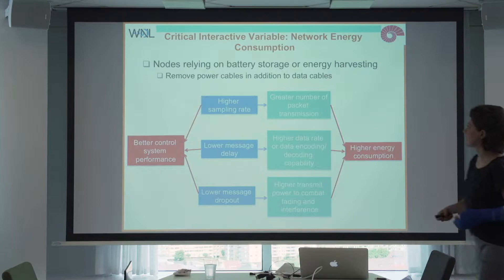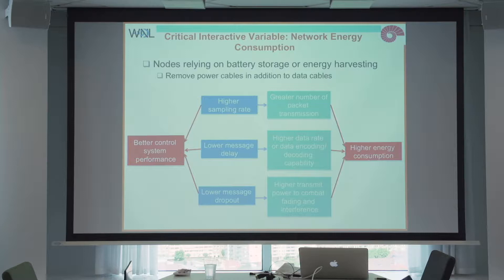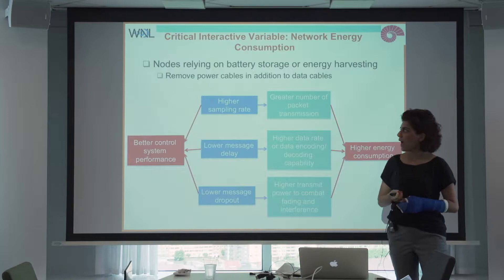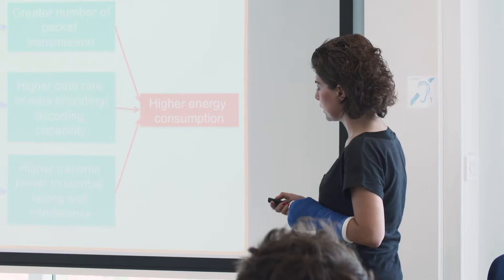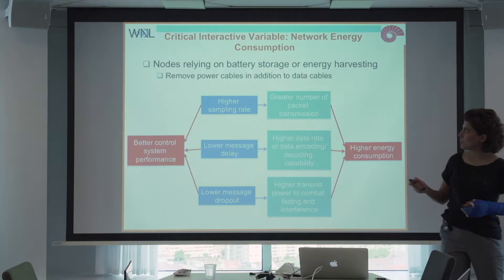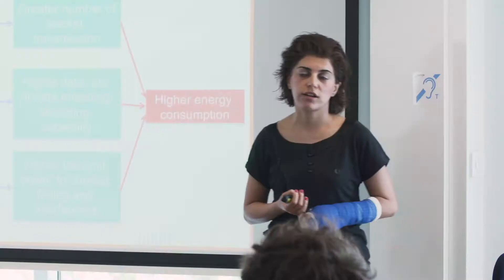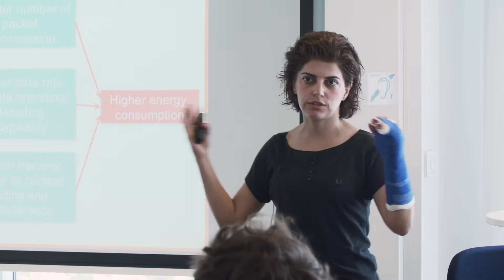We have a sampling rate. It can be a time-triggered system where you sample the system periodically, or an event-triggered system where samples are generated depending on some threshold condition. The higher the sampling rate, the better the control system performance. However, for wireless network design, a higher sampling rate means a greater number of packets generated, resulting in higher energy consumption — so we see the trade-off there.